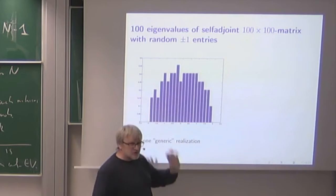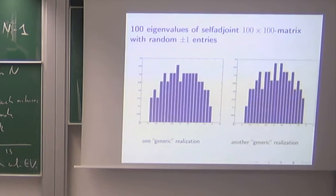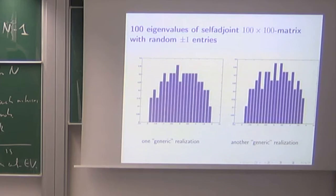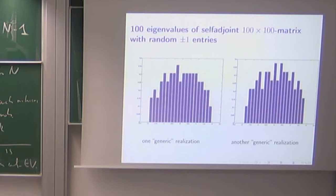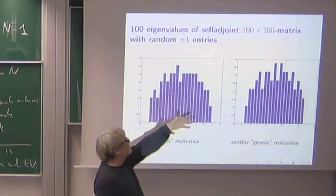So you see I get a kind of a shape which already shows some structure, and the point is that if I'm taking another randomly chosen 100 by 100 matrix with plus and minus ones, I get an eigenvalue distribution which now looks quite close to the other one. So you see there is some structure emerging.